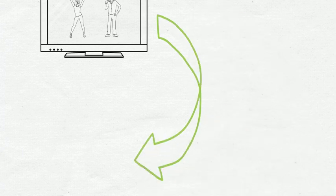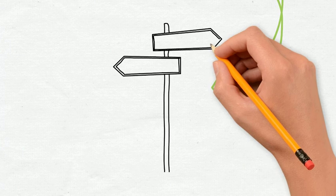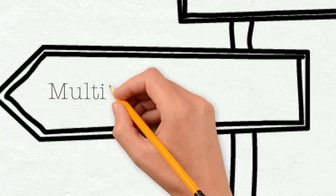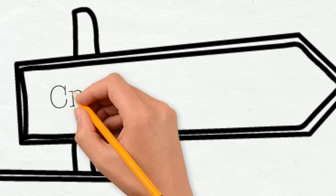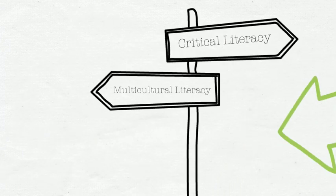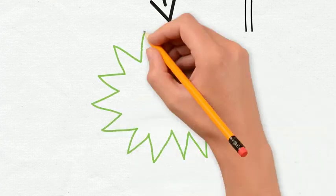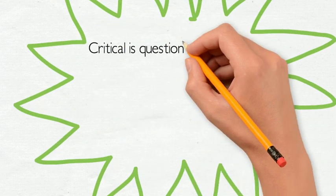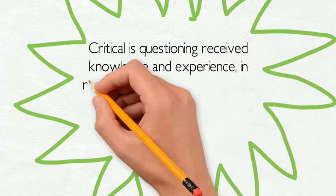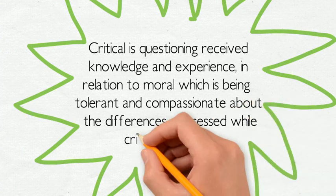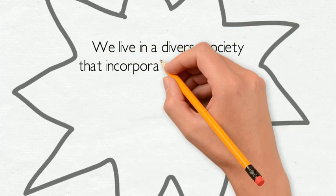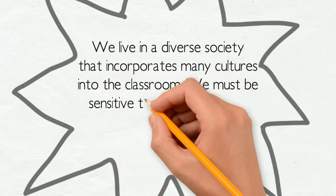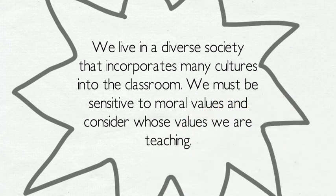This 21st century literacy is not alone in being interconnected. Moral literacy is incorporated in digital literacy. Some other key literacies that are connected are multicultural literacy and critical literacy. As described in Mirana Bajovic's 2011 article, critical literacy is questioning received knowledge and experience in relation to morals — being tolerant and compassionate about differences expressed while critically analyzing. Multicultural literacy is connected to moral literacy as we live in a diverse society that incorporates many cultures into the classroom. We must be sensitive to moral values and consider whose values we are teaching.